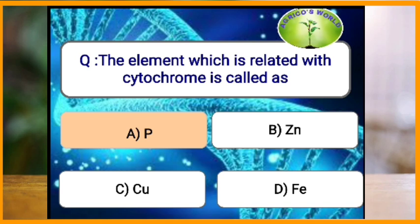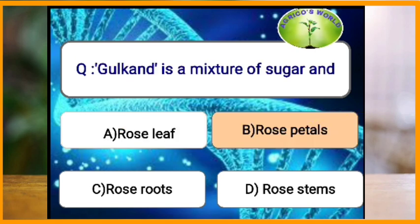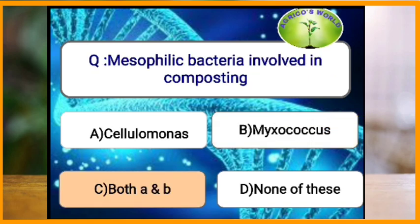The element which is related to cytochrome is iron. Gulkan is a mixture of sugar and rose petals in the ratio of one to one. Mesophilic bacteria involved in composting include Cellulomonas and Myxococcus, which survive at a temperature of 20 to 45 degrees centigrade.